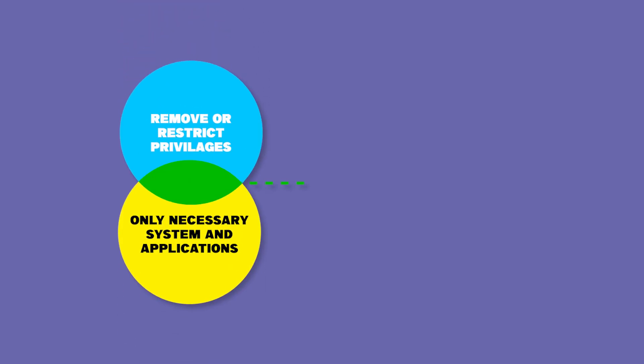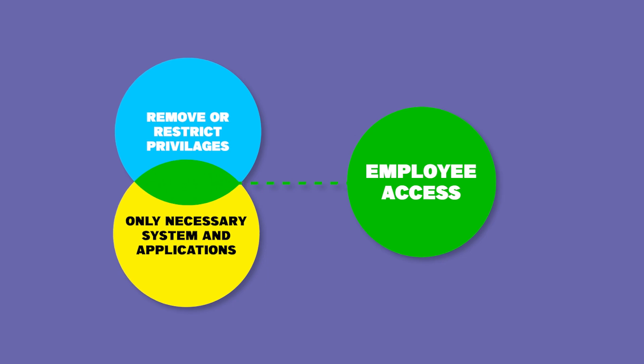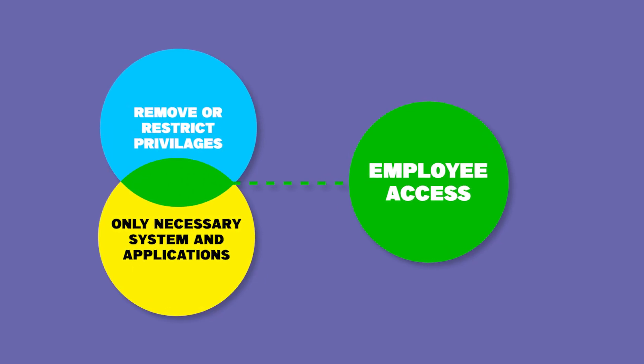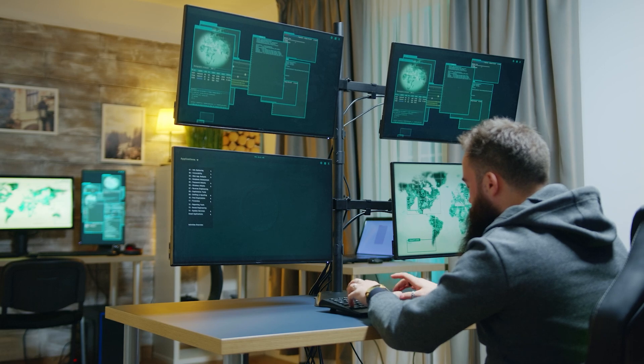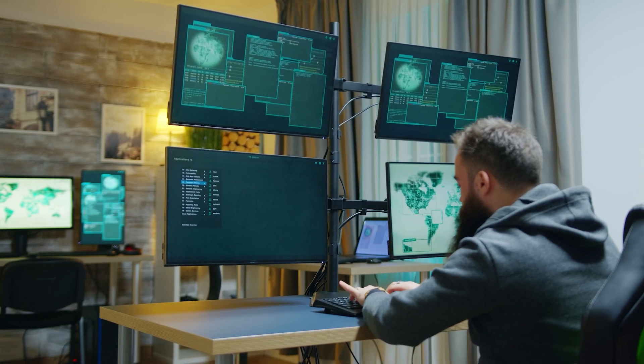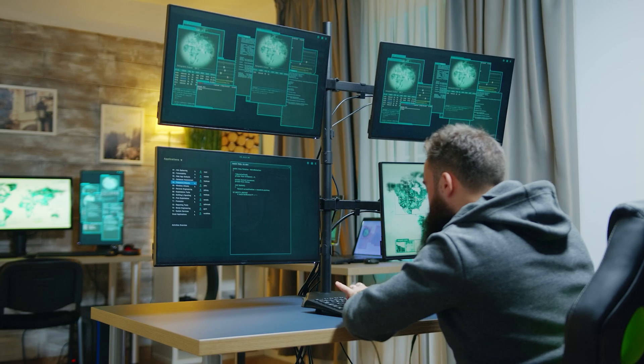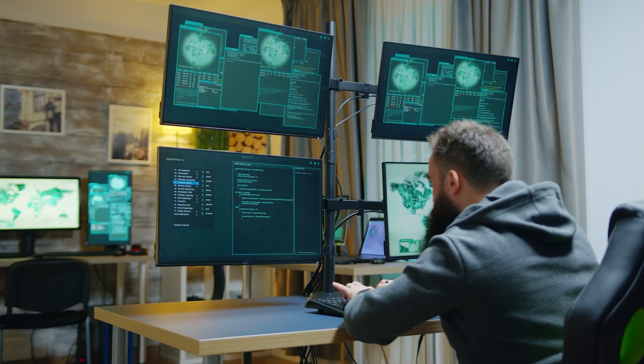Moving on to the third method, we have the principle of least privilege. This is a fundamental security concept that limits user access rights to the bare minimum necessary for their job function. When it comes to defending against ransomware, implementing this principle helps contain the impact of a potential breach. If an attacker gains access to a user's account, the damage can be limited by restricting that account's privileges, preventing unauthorized escalation and making it more challenging for ransomware to spread laterally within an organization's network.